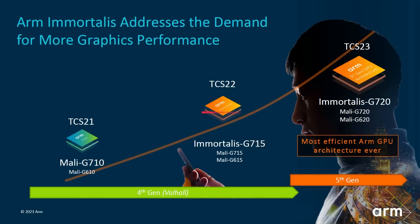Looking at the performance graph over the years: the Total Compute Solution 21 was announced in 2021 and seen in devices mainly in 2022 as the Mali G710. We can basically see each year expecting more and more graphics performance, with ray tracing added along the way. Now we're here with the Immortalis G720 and its counterparts the Mali G720 and Mali G620, all based on this same fifth-gen GPU architecture.